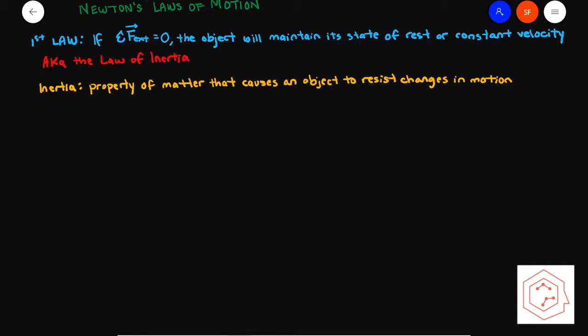What is inertia? Inertia is the property of matter that causes an object to resist changes in motion. Inertia, referred to as I, is directly proportional to mass. So the more mass an object has, the more inertia it has.